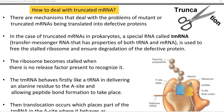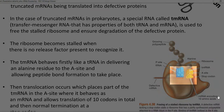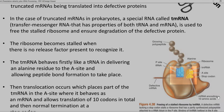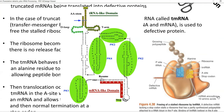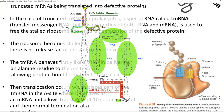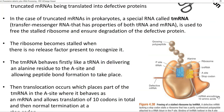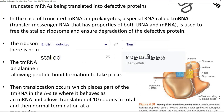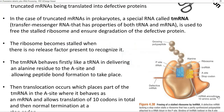Such defective proteins need to be properly degraded in the cell system to maintain stability. In the case of truncated mRNA in prokaryotes, a special form of RNA called tmRNA — transfer messenger RNA — has properties of both tRNA and mRNA, and is used to free the stalled ribosome and ensure degradation of the defective protein.